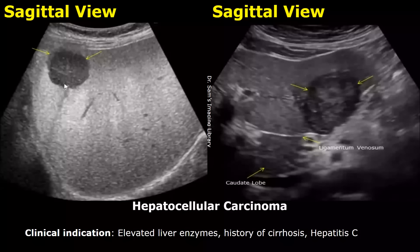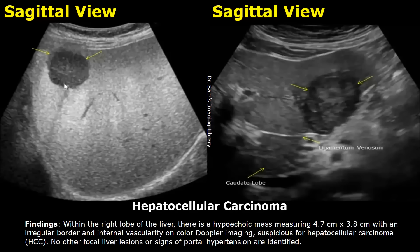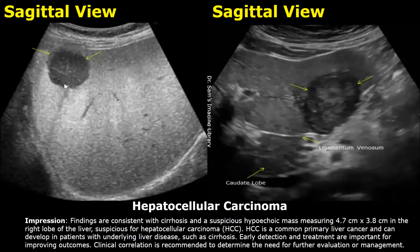For hepatocellular carcinoma, the clinical indications include elevated liver enzymes, history of cirrhosis, or hepatitis C. Its findings include a hypoechoic mass with irregular borders and internal vascularity on color Doppler. These findings are suspicious for hepatocellular carcinoma. In this example, cirrhosis was also present, so it is mentioned in the impression along with the suspicious mass and its features. Clinical correlation is recommended to determine the need for further evaluation or management.